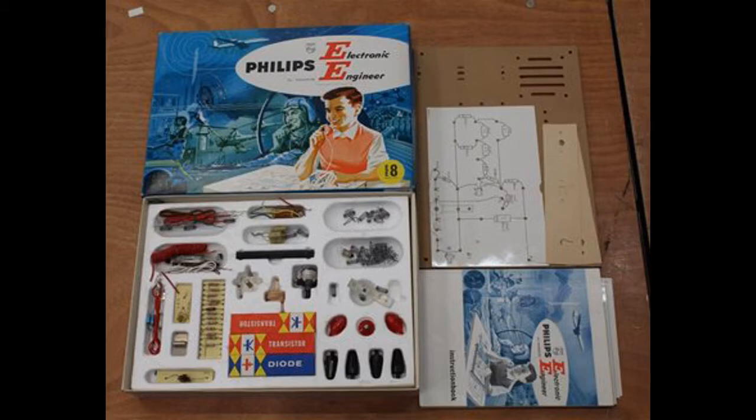The EE-8 kit consists of a tray of discrete components, eight project layout cards, a comprehensive manual plus a drilled baseboard and assorted hardware onto which each project was assembled.